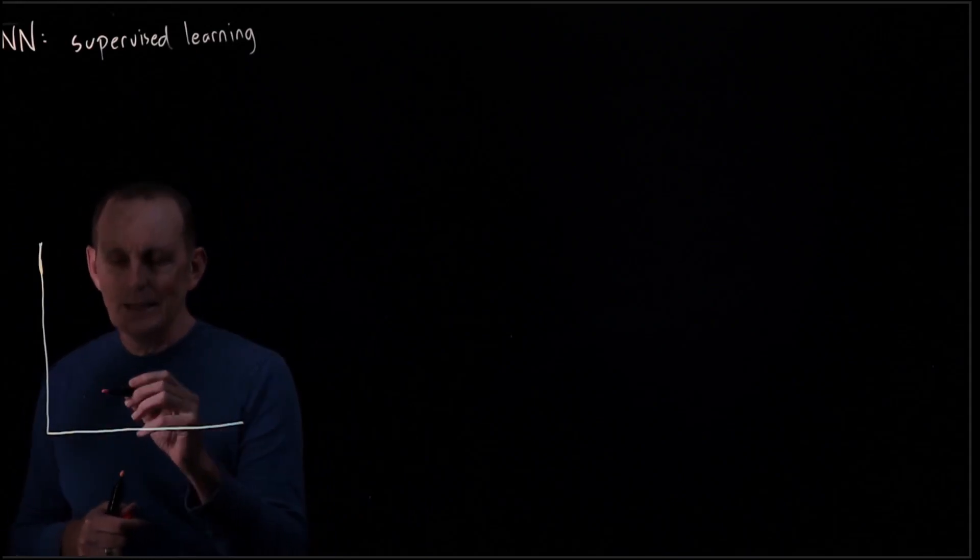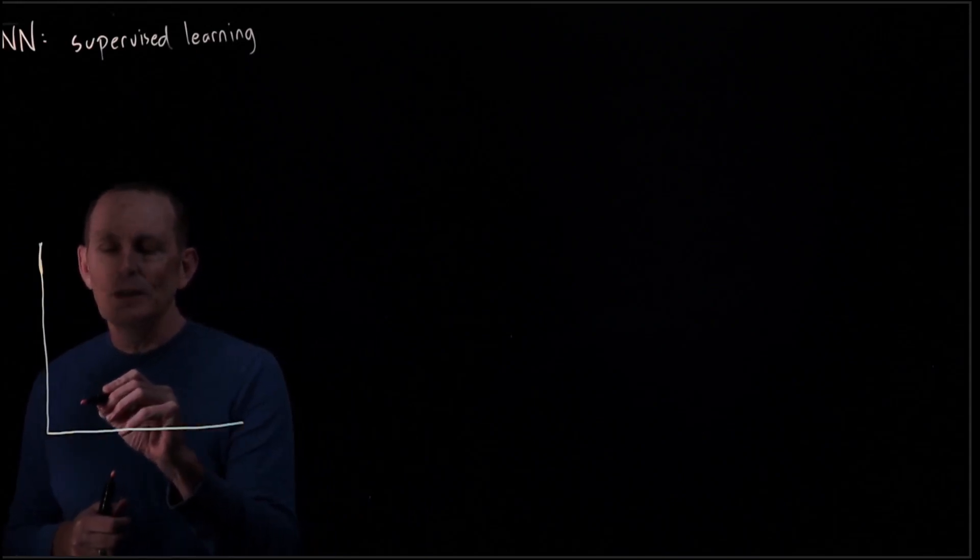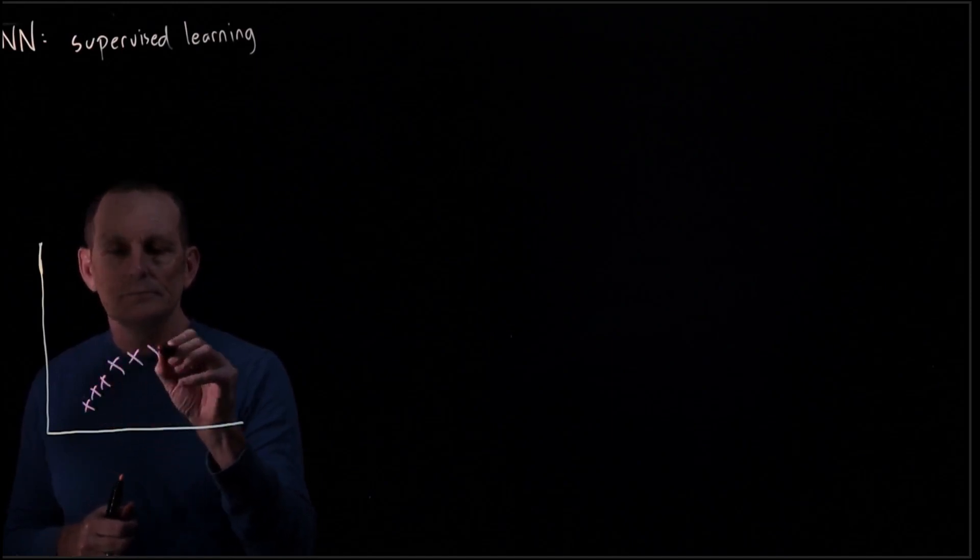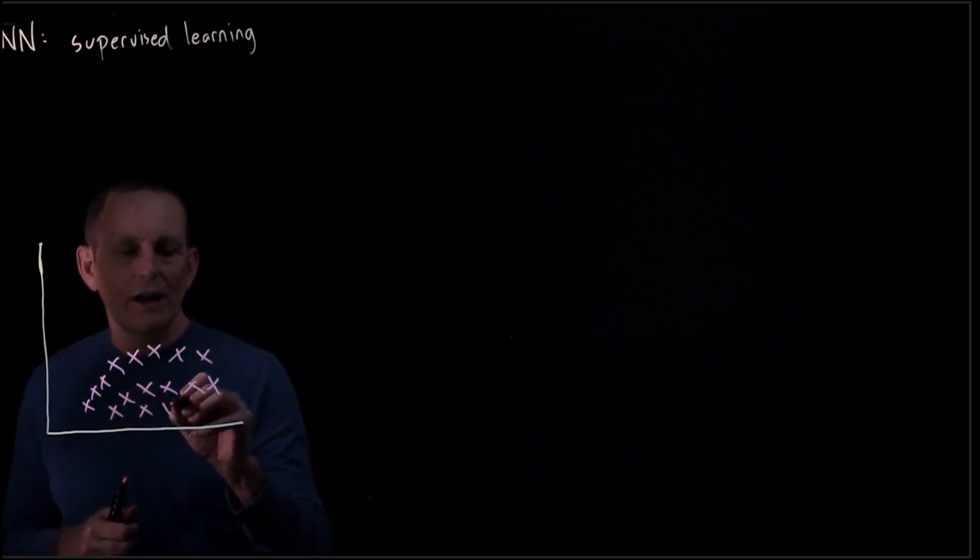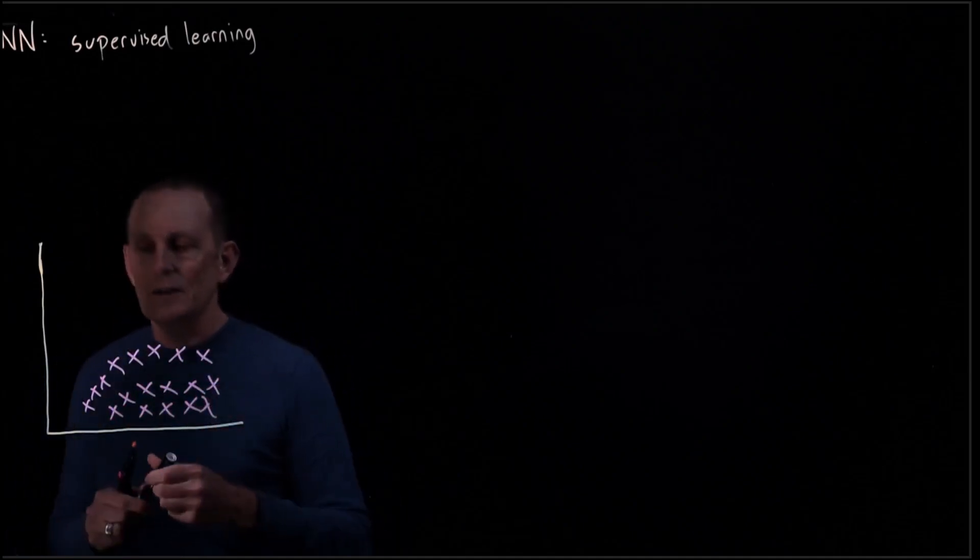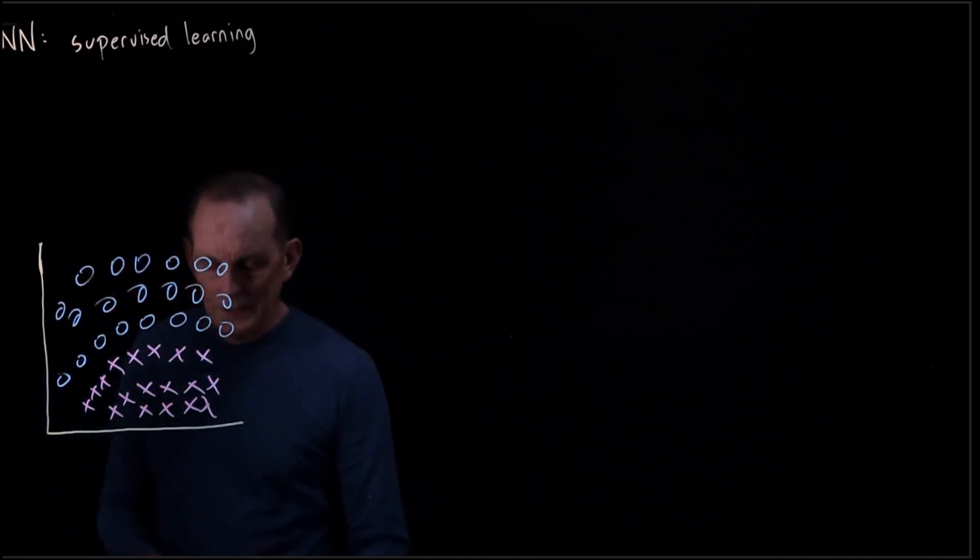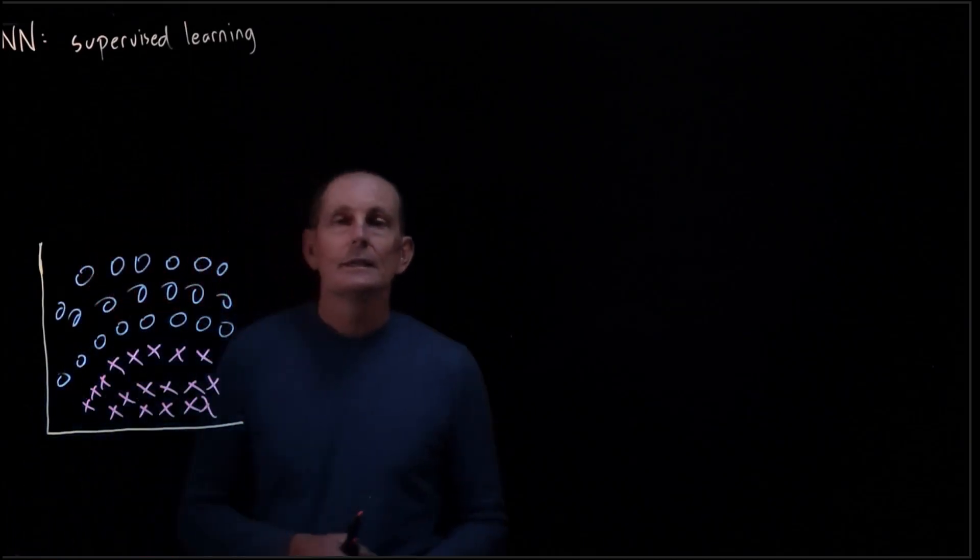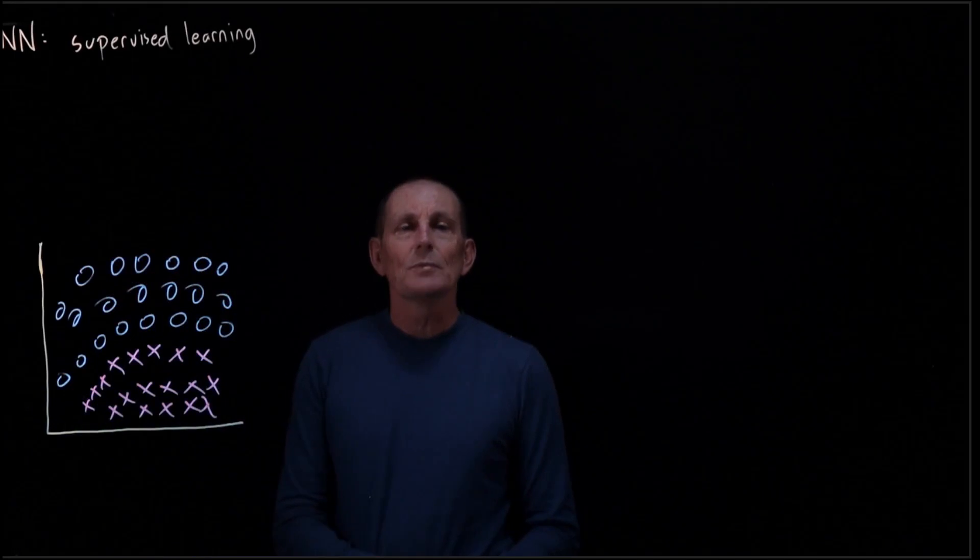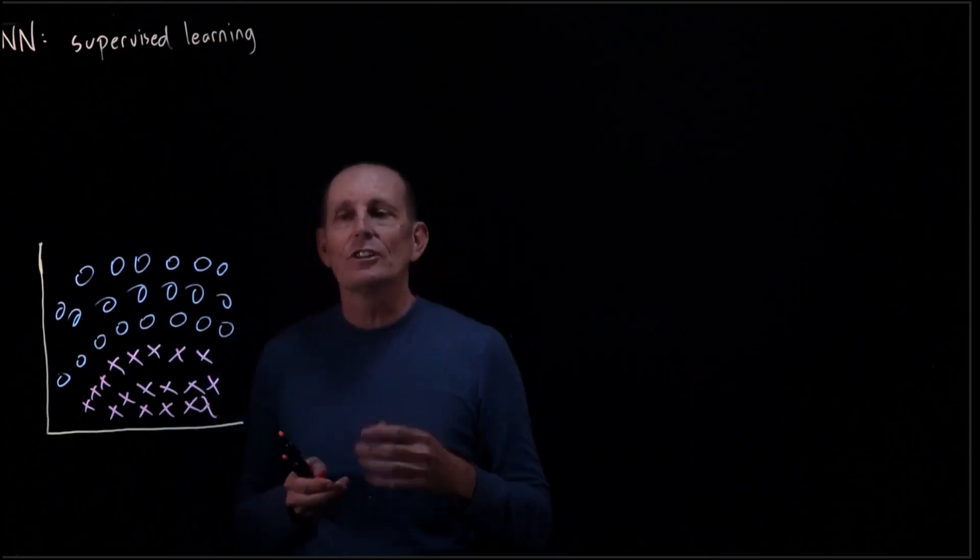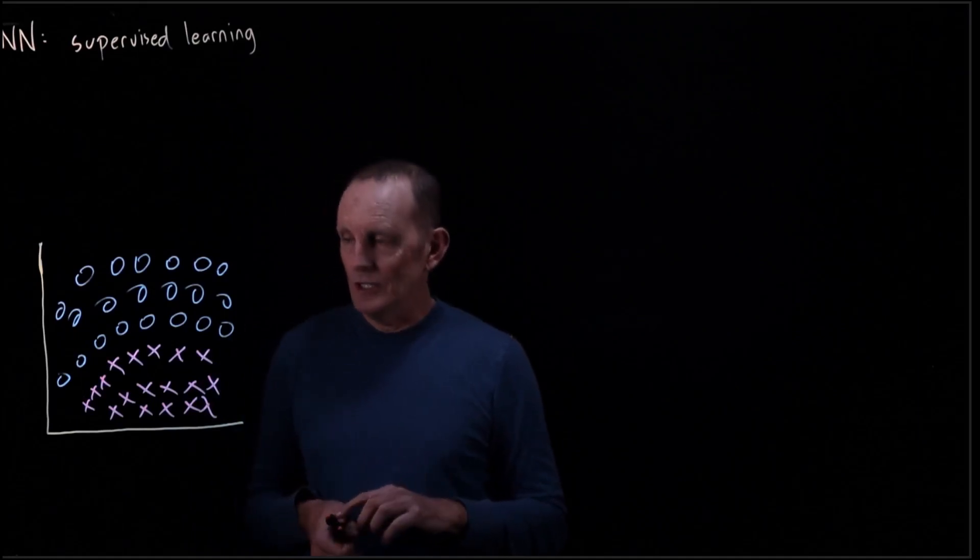We're categorizing either to be x's or o's. So this is a bunch of our labeled data, and we've also got some o's. And so what we can do is create a function of some sort, and we're going to say that this function, if you're above the function, you're an o, and if you're below the function, you're an x.